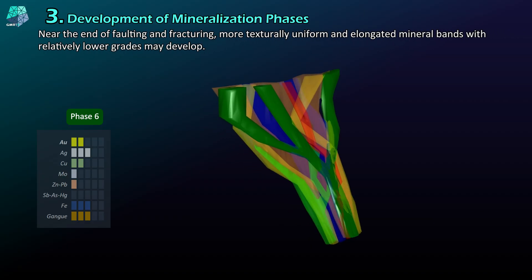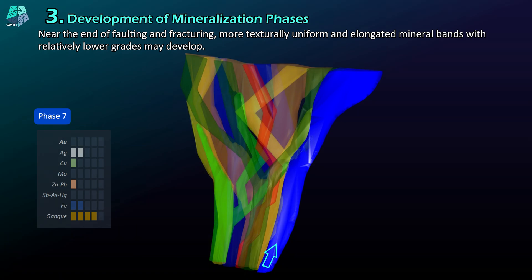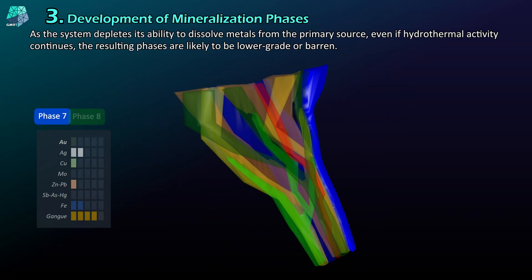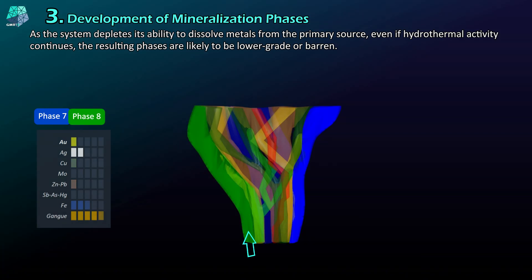Near the end of faulting and fracturing, more texturally uniform and elongated mineral bands with relatively lower grades may develop. As the system depletes its ability to dissolve metals from the primary source, even if hydrothermal activity continues, the resulting phases are likely to be lower grade or barren.